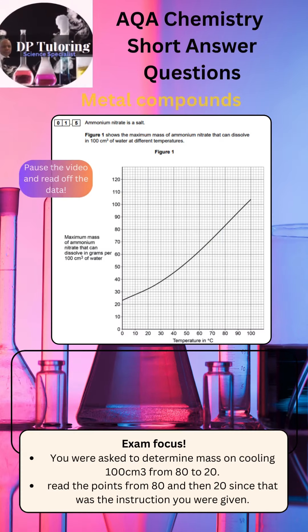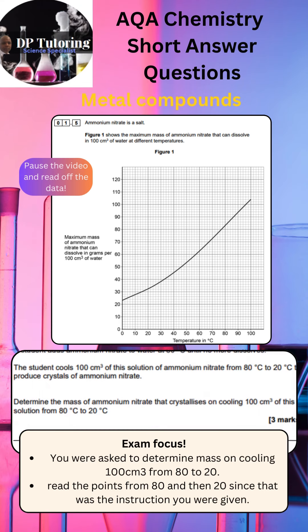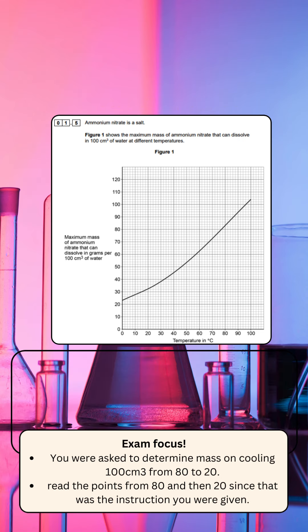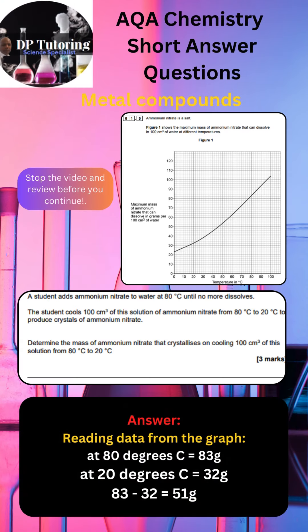The final part of the question asks you to read data from a graph. You need to focus on the information given to determine the mass of copper sulfate when cooling 100 cm³ from 80 to 20 degrees Celsius. Read the points from 80 and then 20, then find the difference. At 80°C the value equals 83 grams; at 20°C it equals 32 grams. 83 minus 32 equals 51 grams.